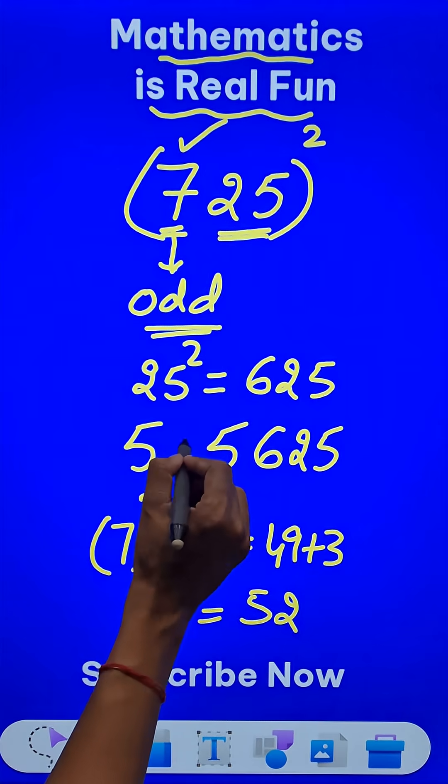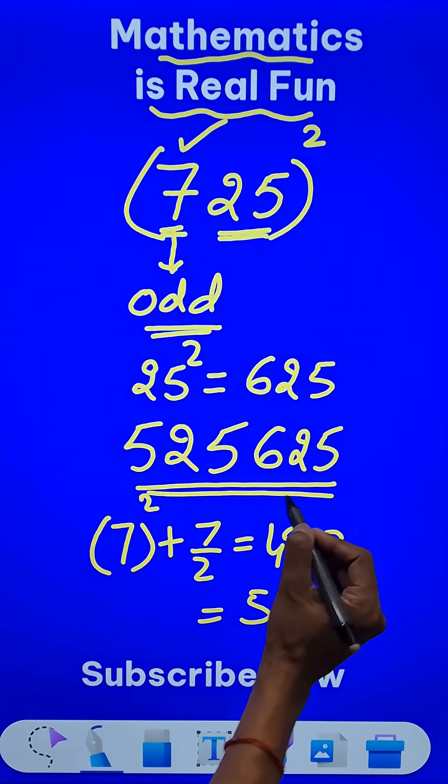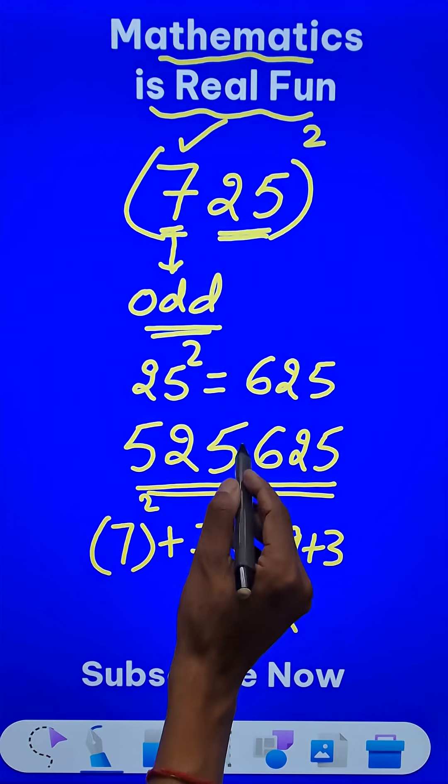Just prefix 52 with this number. You will get the square of 725 as 525,625.